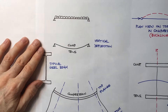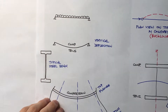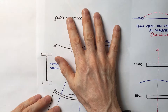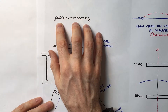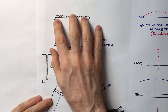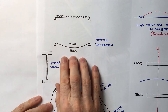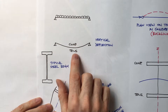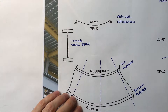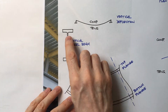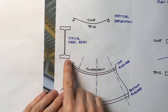I'll give a simple introduction by looking at a beam supporting a UDL which deflects, and lo and behold, there's compression on the top and tension on the bottom. So for a typical I-beam, the top flange would be in compression and the bottom in tension.